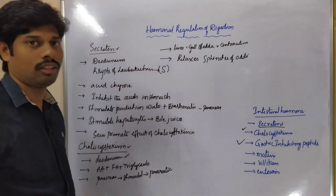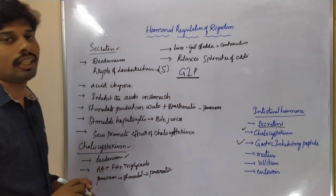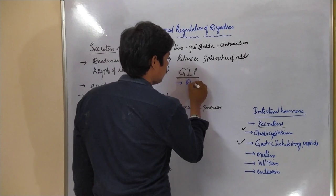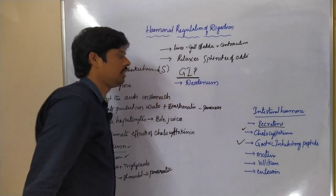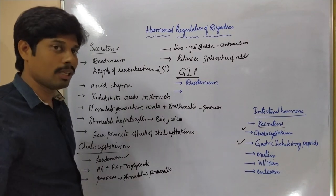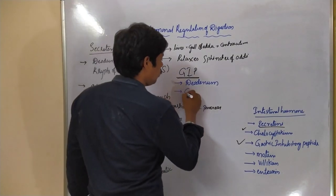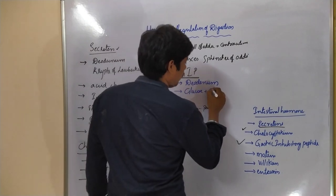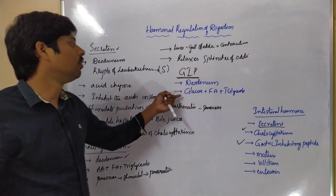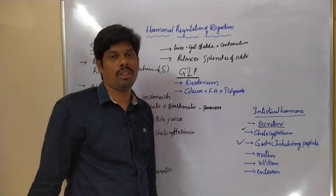The next hormone is gastric inhibitory peptide, simply called GIP. This is also produced by the duodenum. Its secretion is stimulated by acid chyme that contains rich food sources like glucose, fatty acids, and triglycerides.